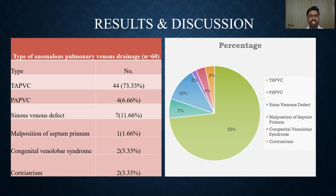Coming to the results and discussion of our study, we had a total of 60 patients, out of which 44 patients had TAPVC, 4 patients had PAPVC, 7 patients had sinus venosus defect, 1 patient had malposition of septum primum, 2 patients had congenital venolobar syndrome, and 2 patients had cor triatriatum. Among all the spectrum, TAPVC was the most common pattern and malposition of septum primum was the least common type.